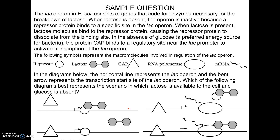Here's a sample question. On the AP exam, you typically don't have to label an operon from scratch or describe what the lac operon does. They tell you: the lac operon in E. coli consists of genes that code for enzymes necessary for the breakdown of lactose. When lactose is absent, the operon is inactive because a repressor binds to a site in the lac operon. When lactose is present, lactose molecules bind to the repressor protein, causing it to dissociate from the binding site. In the absence of glucose, a preferred energy source for bacteria, the protein CAP binds to a regulatory site near the lac promoter to activate transcription of the lac operon.